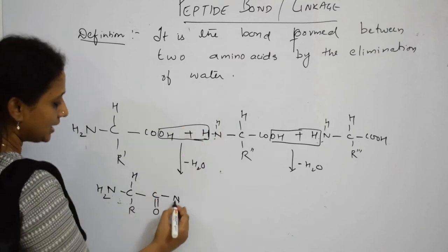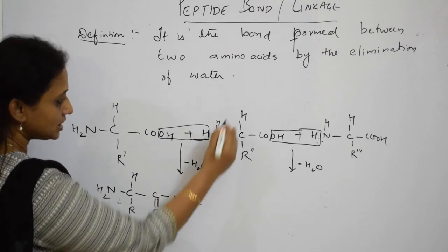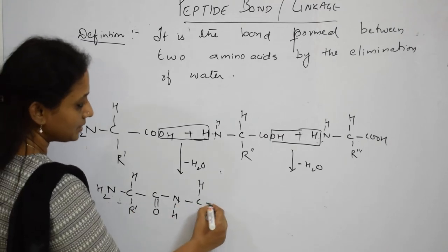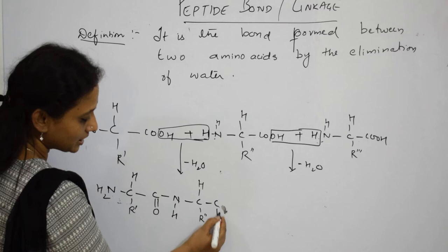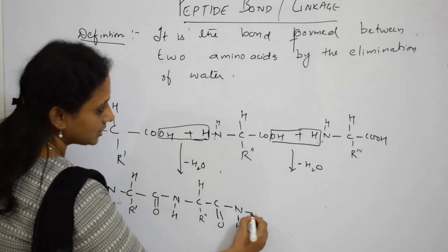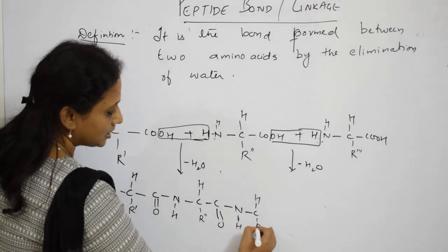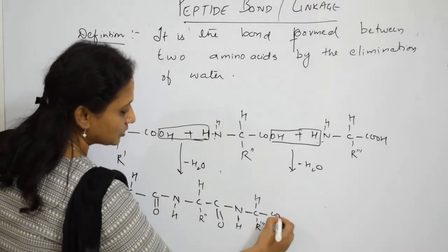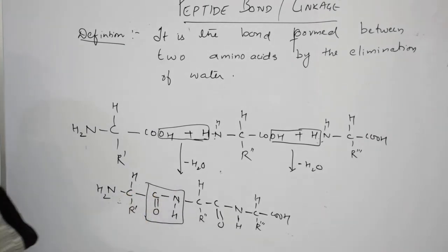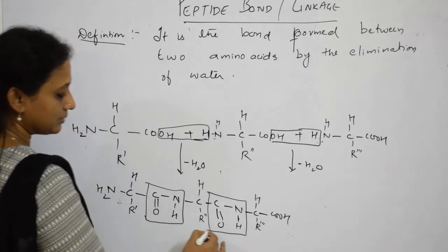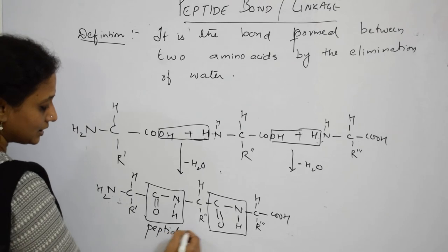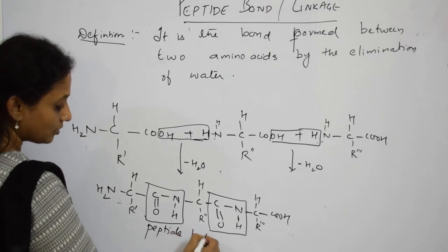What you now have is N–H and C=O joined together. Writing it out: N–H, C–H–R, C=O, continuing along the chain. The bond where water was eliminated — this bond — is called the peptide bond or peptide linkage. The combination of C=O and N–H is what defines the peptide bond.